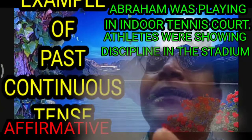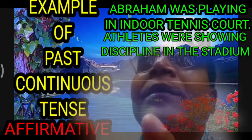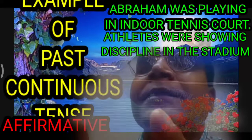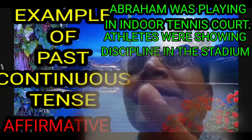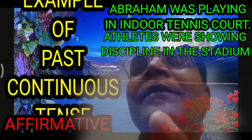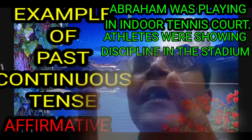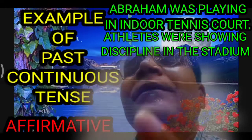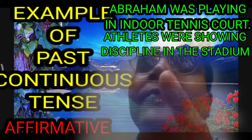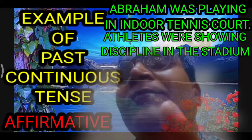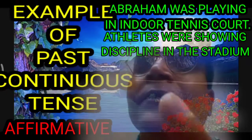Here are examples of the affirmative case of past continuous tense. In these examples we can easily understand the root formula. First example: 'Abraham was playing in the indoor tennis court.' Second example: 'Athletes were showing discipline in the stadium.' It is very clear that was and were are used, and the ing form of the verb is also used, which makes our root formula absolutely clear.